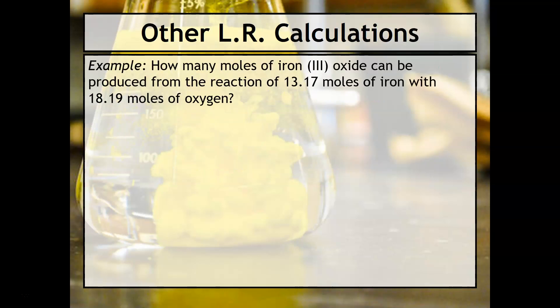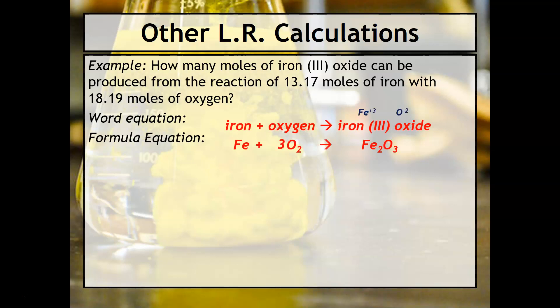Before we do that, I wanted to show you another way that you can calculate limiting reactants, specifically using mole-mole calculations. In this question, we've got iron 3 oxide being produced from moles of iron and moles of oxygen. As usual, we'll need our word equation and our formula equation. We're going to do our first calculation from moles of iron to moles of iron 3 oxide, and our second calculation from moles of oxygen to moles of iron 3 oxide.